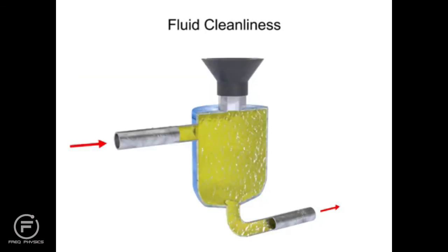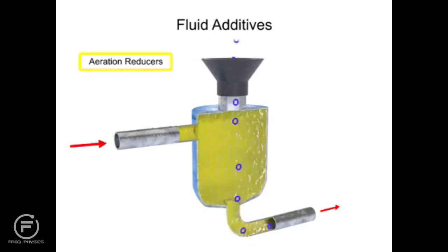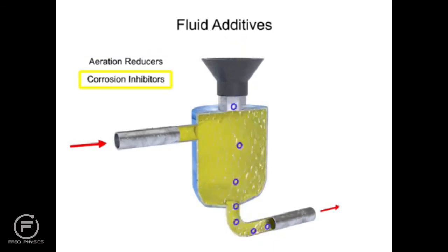Another factor common to hydraulic fluids are the use of additives. Additives can be used to reduce aeration and the production of bubbles as the fluid travels rapidly throughout the system. They can be used to administer corrosion inhibitors within the reservoir, and they can be used as a demulsifying agent, which helps the fluid resist mixing with water.